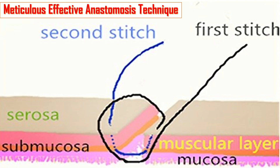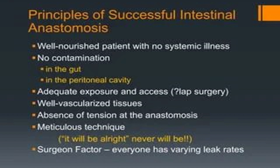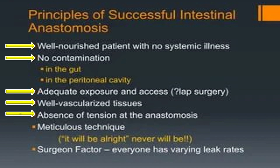A meticulous and effective anastomosis technique is necessary to optimize surgical outcome and minimize anastomotic complications. The principles of successful intestinal anastomosis include: a well-nourished patient with no systemic illnesses, no contamination in the gut or peritoneal cavity, adequate exposure and access — especially in laparoscopic surgery — well-vascularized tissues, absence of tension at anastomosis, meticulous technique, and surgeon factors, as everyone has varying leak rates.